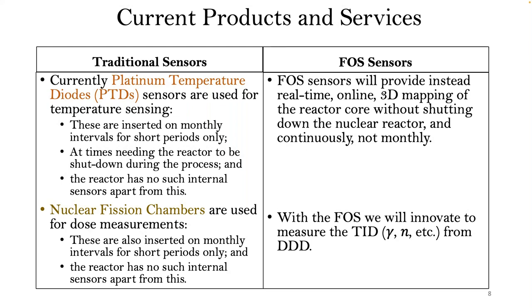You also have nuclear fission chambers which are used for dose measurement. These are also inserted on monthly intervals for short periods of time, and the reactor has no such permanently installed sensors. With fiber optic sensors, you will instead be able to provide real-time, online data, and also have a 3D mapping of the reactor core without shutting down the nuclear reactor.